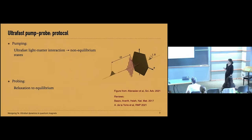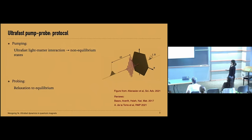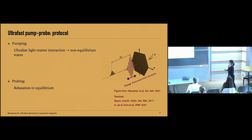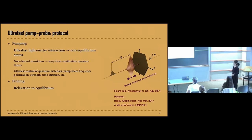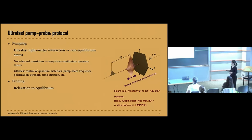Let me give you an introduction of the ultra-fast pump-probe protocol. It consists of two parts: first is the pumping, and the second is the probing part. In the pumping part, we shine a strong ultra-fast laser of about hundreds of femtoseconds duration to the system. We are interested in this strong ultra-fast light-matter interaction and the non-equilibrium states created by the light-matter interaction. In particular, we want to study the non-thermal phase transition, namely where the effective temperature framework breaks down, and instead we need to develop an away-from-equilibrium quantum theory to understand it.